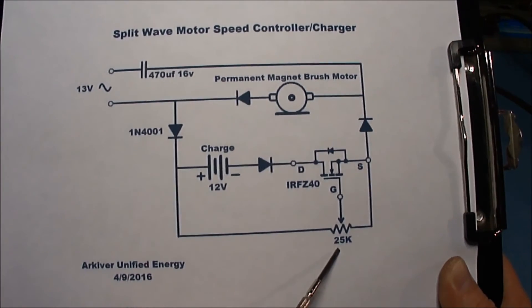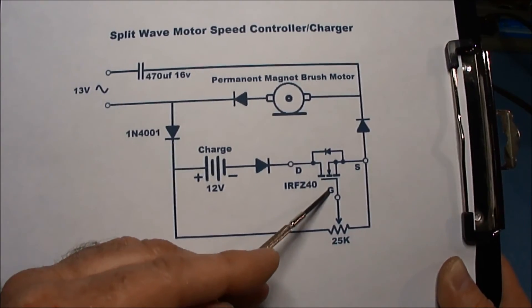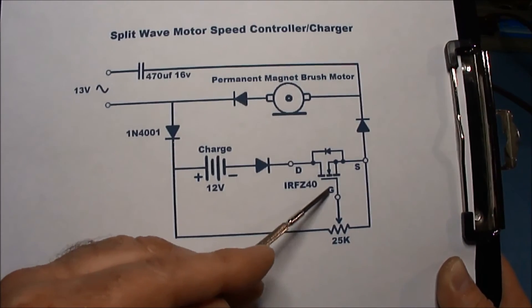I'm using a 25k pot here, which I imagine would have to also be changed, because you don't want your voltage to go too high on your gate, or you'll burn out the transistor.